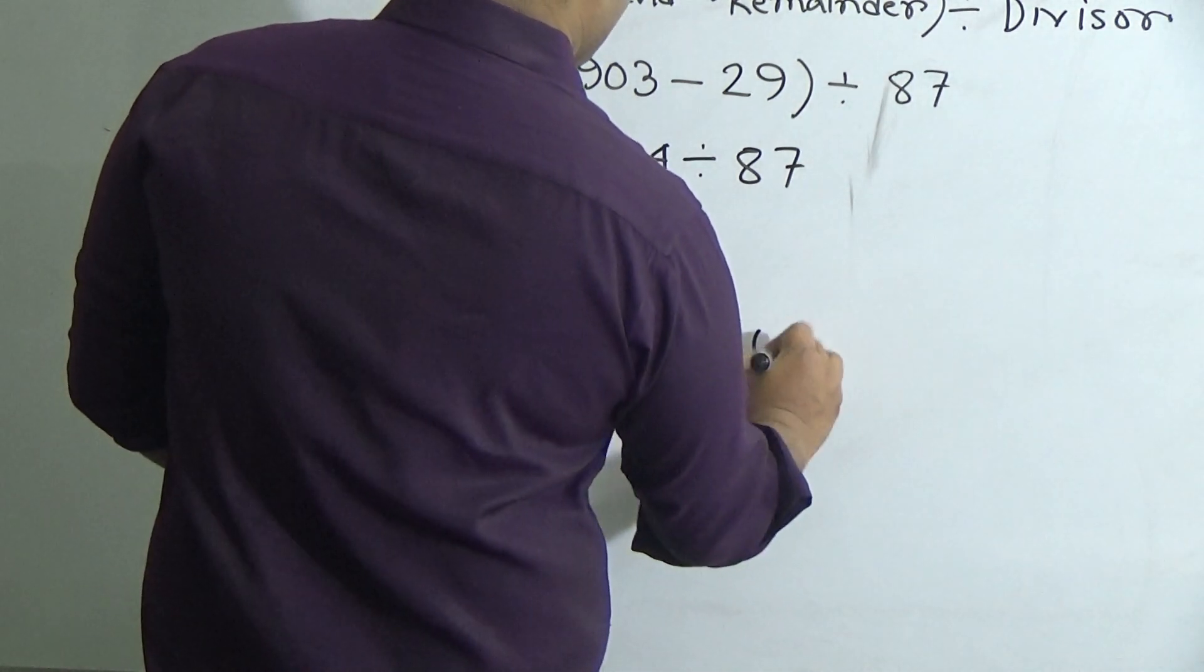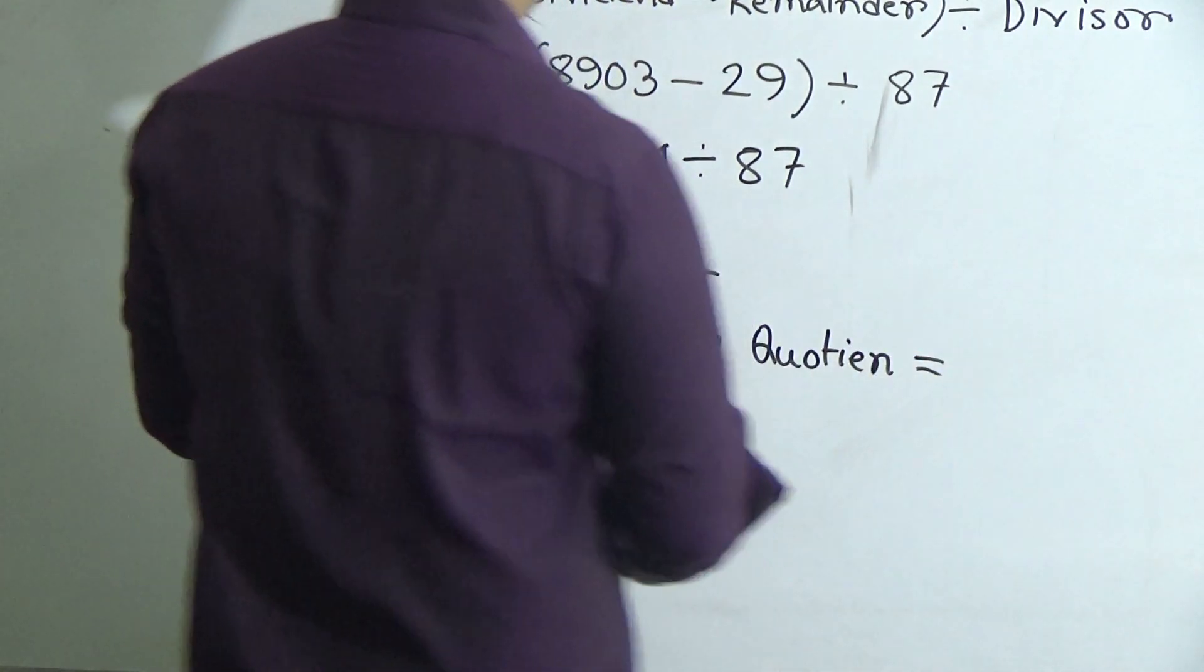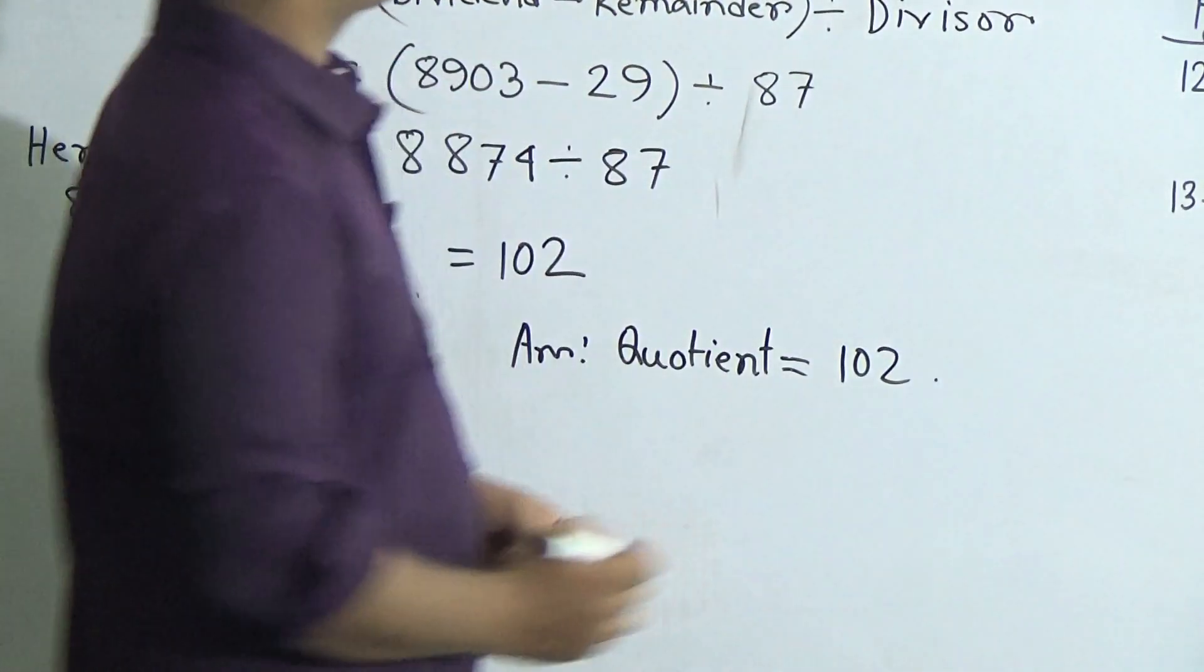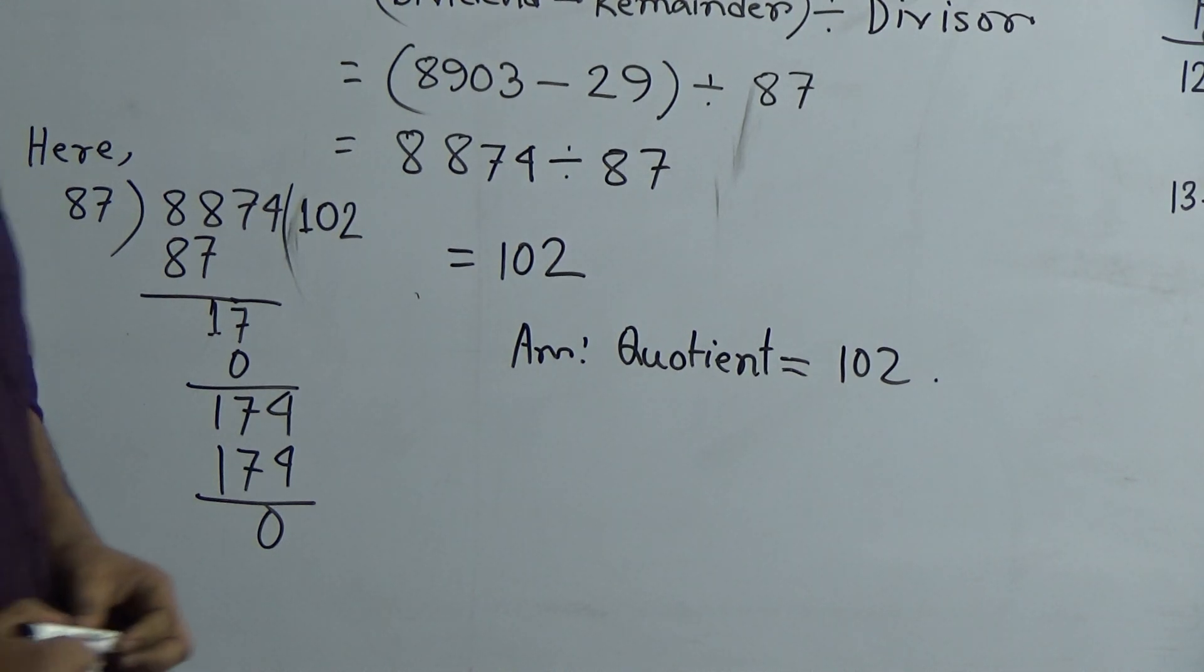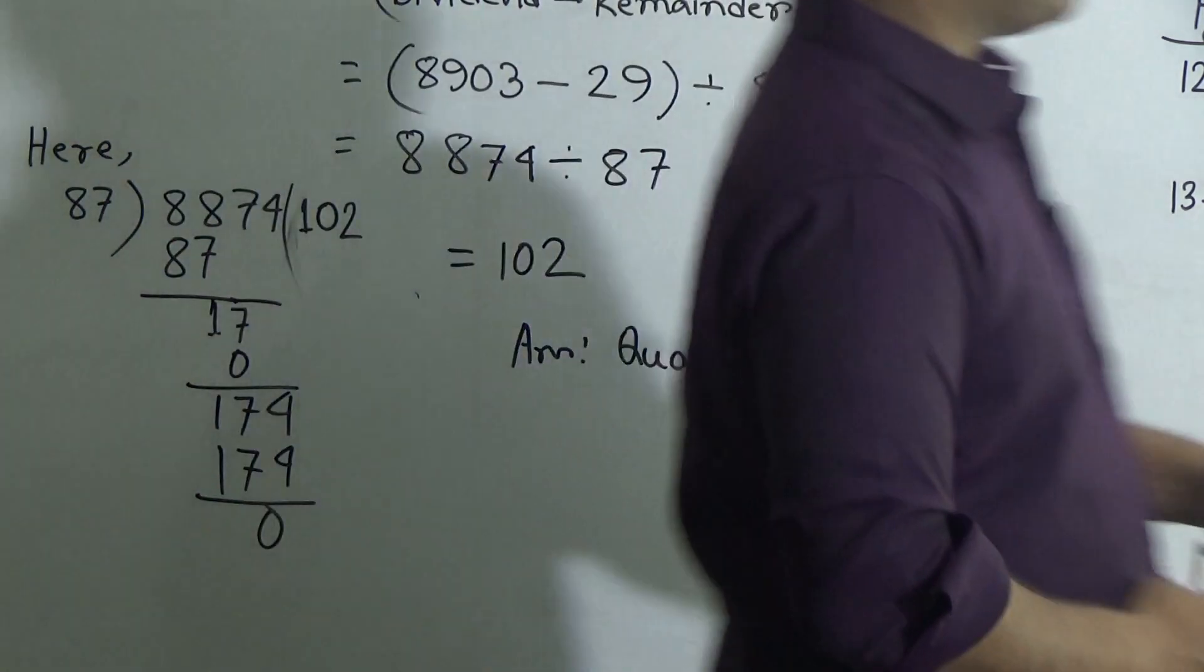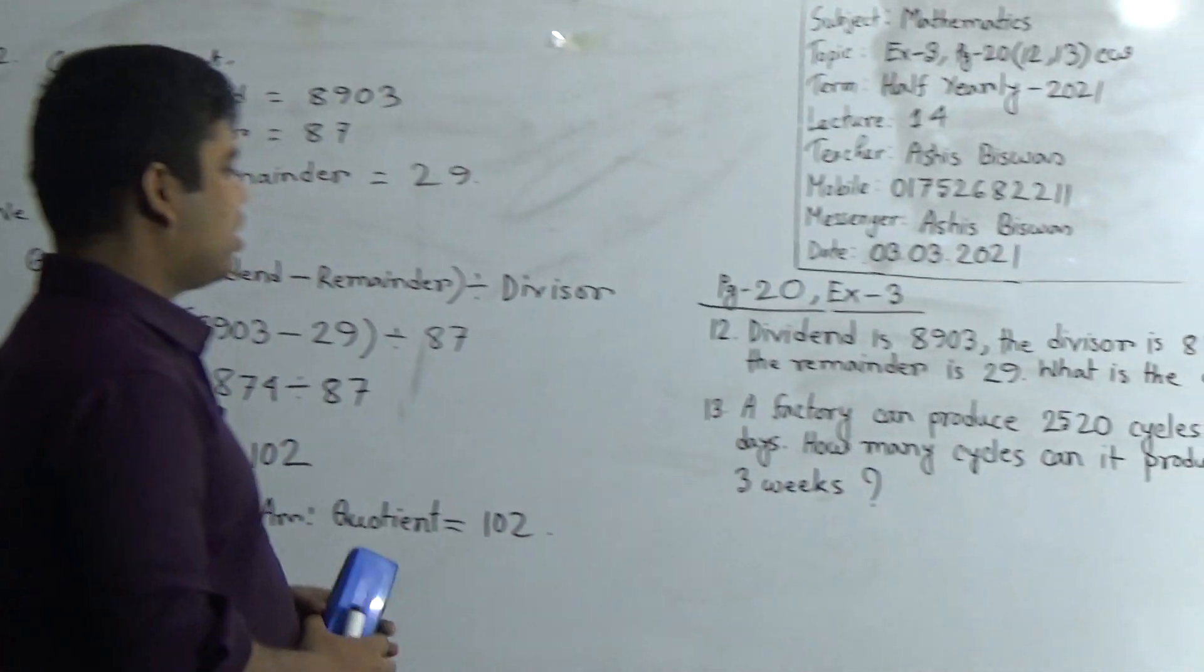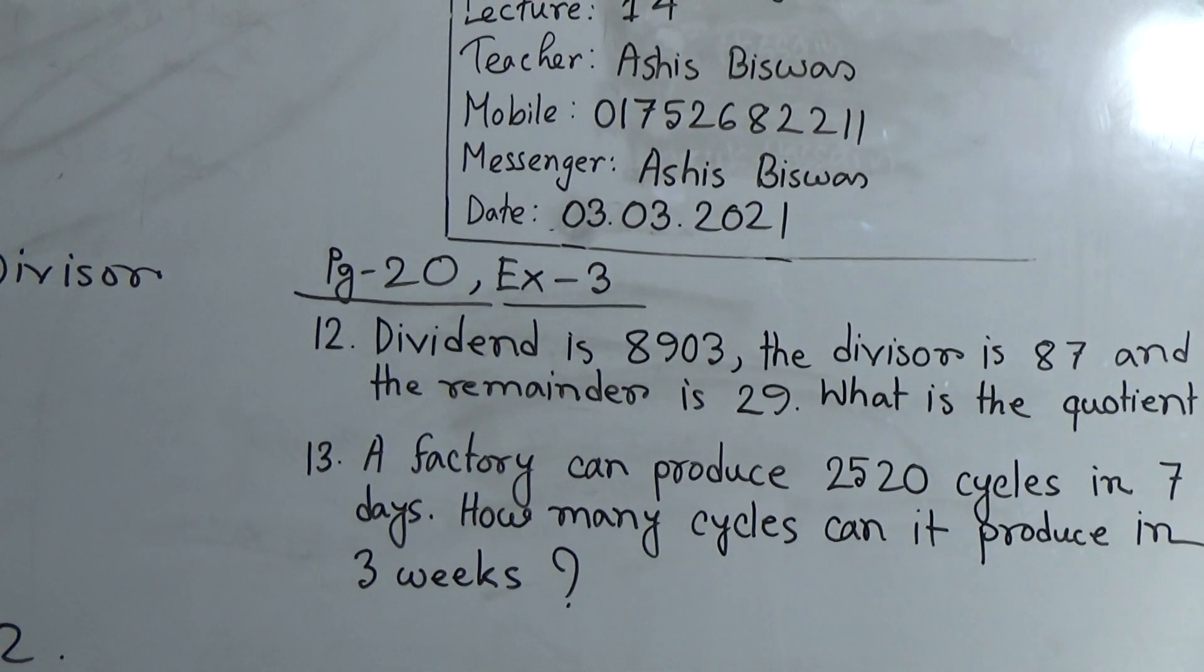Answer: quotient equals 102. I hope you have understood. This is so easy math. If you practice it, it is easier for you. Next, we shall solve question number 13. In order to solve question number 13, we erase question number 12.